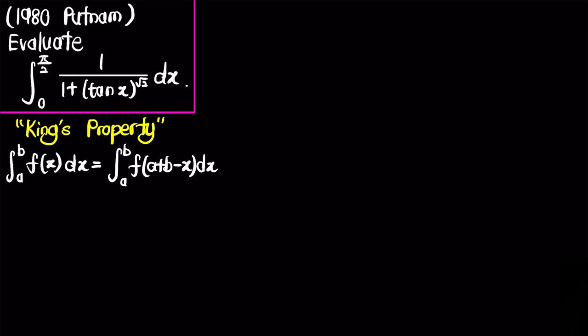When solving Putnam exam integrals, there are usually many tricks to use. In this problem we'll use a trick sometimes referred to as the king's property, which is actually just a change of variable. It states that the integral from a to b of f(x) dx equals the integral from a to b of f(a+b−x) dx.